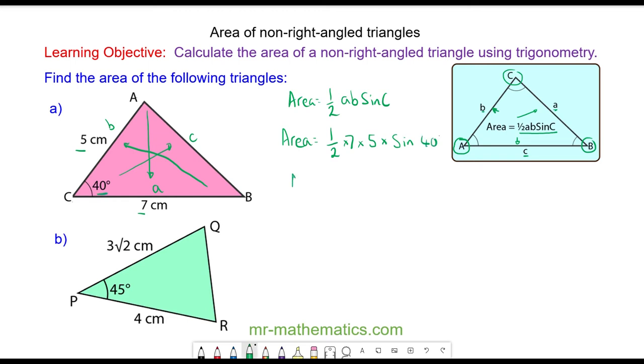So the area will equal one half times seven times five, which is 17.5, times the sine of angle C, which is the sine of 40, or 0.643.